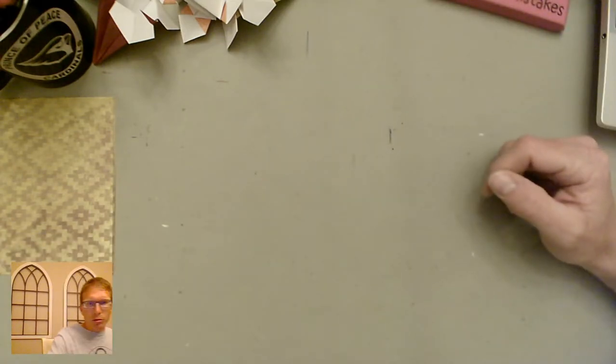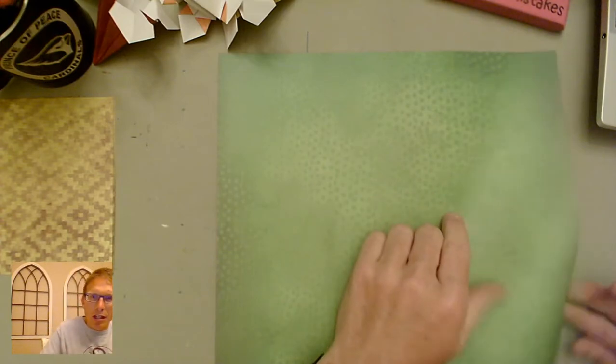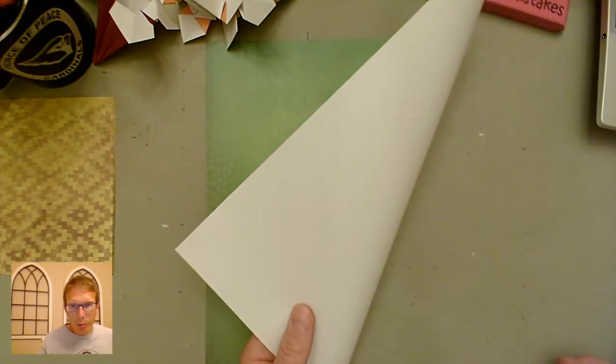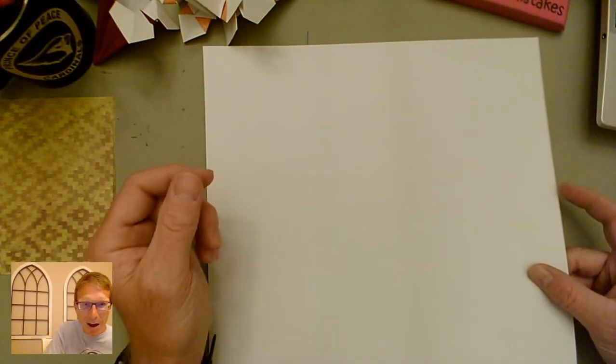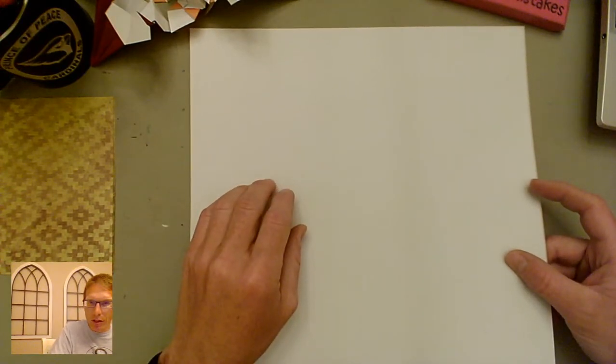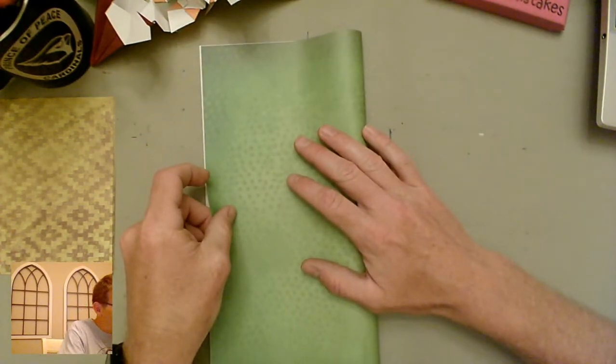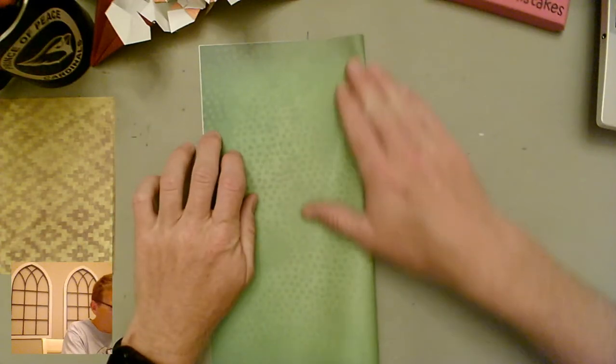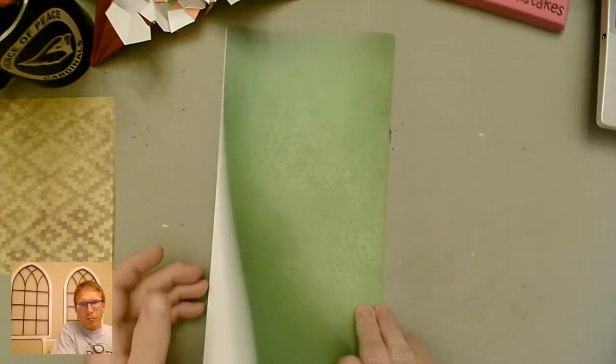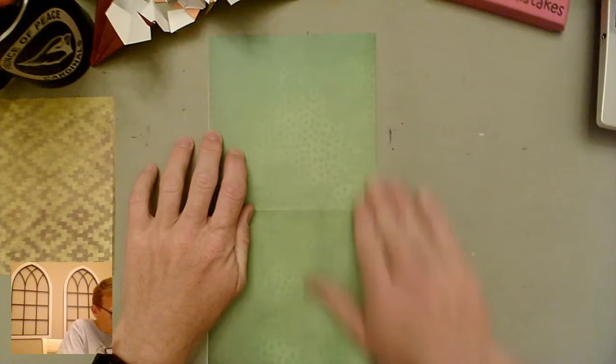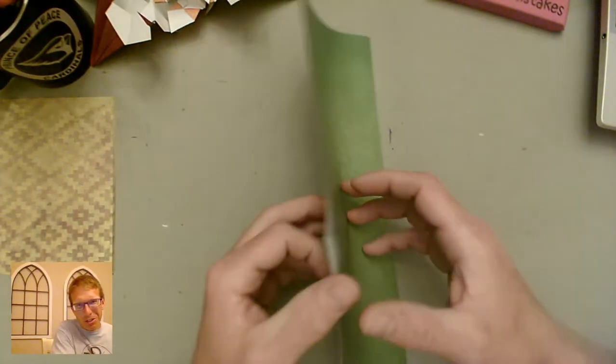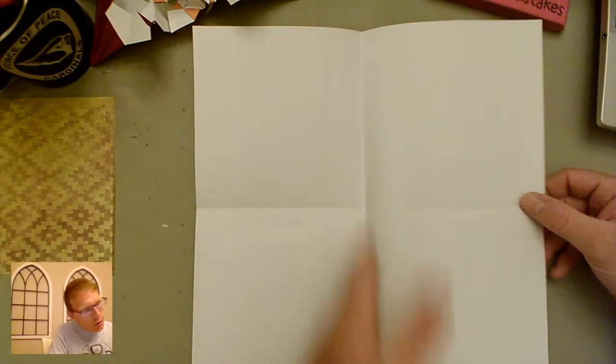So what I'm going to do is I'm going to take a green sheet of scrapbook paper. So it's color on one side and white on the other side. So to do the Sanbo, you want the color to be down first and then you're going to do the first two folds, which is the cross. So fold it in half vertical, then open it up and fold it in half horizontal.